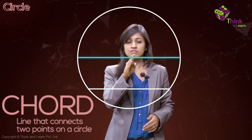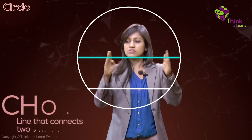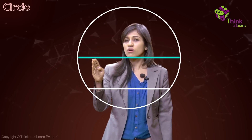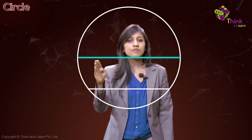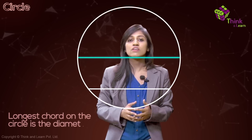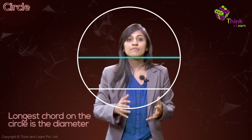An important question: is the diameter also a chord? Does it connect two points on a circle? Of course it does — but it is also a diameter. So what's the difference? The longest chord you can draw on a circle is the diameter.